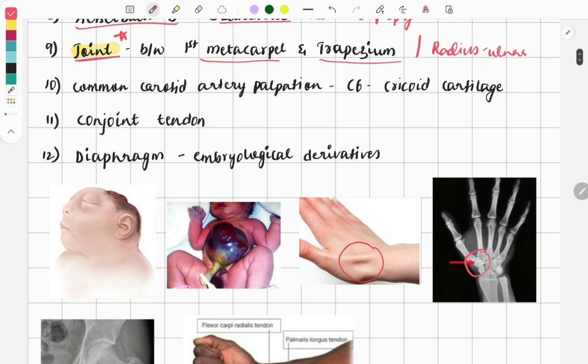The next question was asked on the common carotid artery palpation—where you palpate the common carotid artery. It is palpated against the vertebra C6, which is the level of the cricoid cartilage.